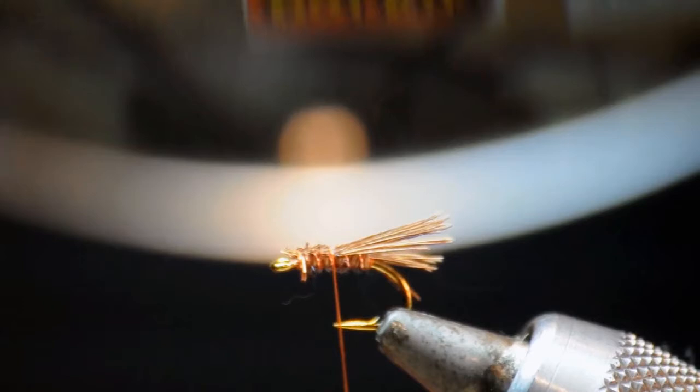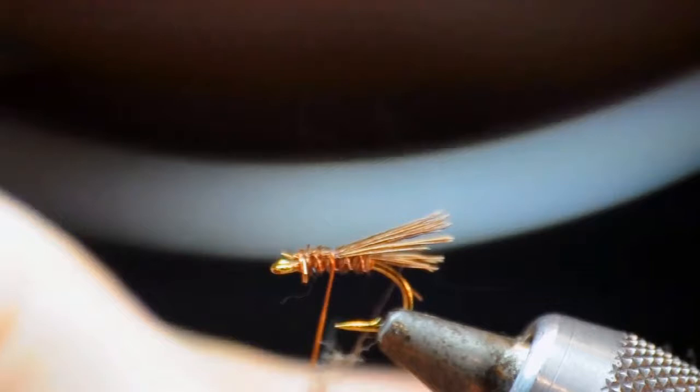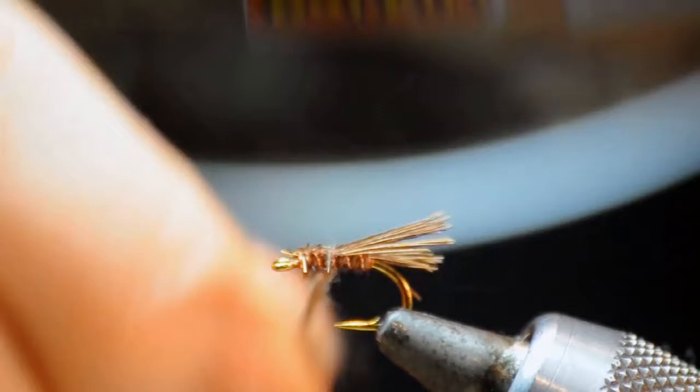Now to form the thorax I'm going to use some black bear dubbing. It's just what I have on hand. You can use the traditional peacock herl, more pheasant tail or thread, whatever floats your boat really. You're just trying to promote the profile of the thorax. This is a nice buggy dubbing. I think it works well here.